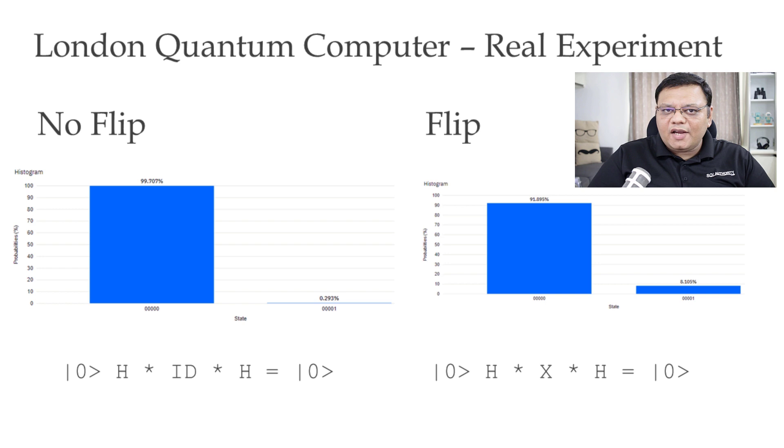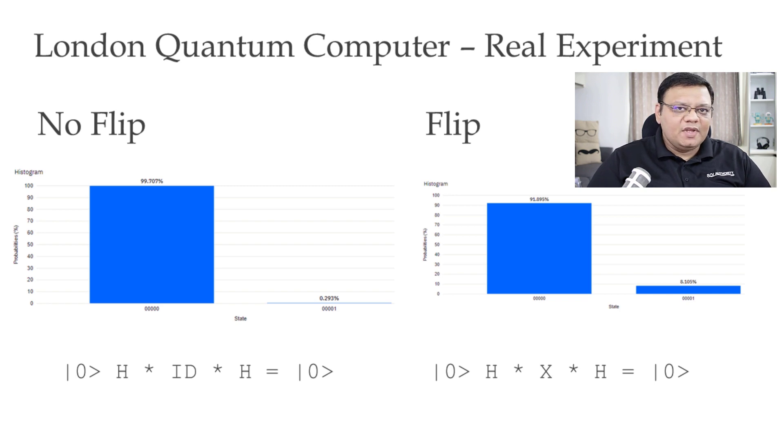If you do not trust the simulation, here is actual output of the same simulation run on London's actual quantum computer, and you will see that the computer wins over 90% of the time. The three primary principles of quantum computing are: superposition, entanglement, and fault tolerance. We will discuss them in future videos. I hope you have enjoyed this video. Please comment, like, and subscribe. We will meet again very soon.